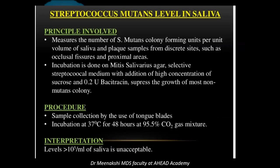Streptococcus mutans levels in saliva measure the number of Streptococcus mutans colony-forming units per unit volume of saliva, from both saliva and plaque samples, including proximal areas and occlusal fissures. Incubation is done on Mitis Salivarius agar, which is a selective Streptococcus medium with a high concentration of sucrose and 0.2 units of bacitracin. Bacitracin suppresses the growth of most non-mutans colonies. Sample collection is done using tongue blades, and incubation is for 48 hours at 37°C in a gas mixture enriched with 5% carbon dioxide.